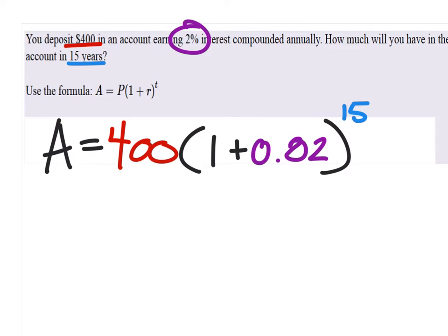Now some of us can plug this directly into the calculator. Others of us would have to do this step by step. So I'd have 400 times 1.02 to the power of 15.